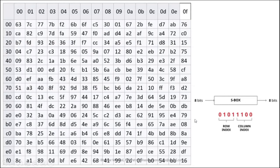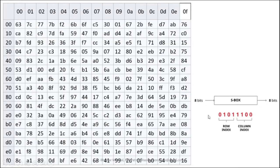The first 8 bits after adding the round key are split into two 4-bit parts: the first 4 bits are used as the row index and the next 4 bits as the column index. The intersection of that row and column gives a cell value, which is the 8-bit output of the S-box. This happens for all 16 bytes, giving 16 outputs from the S-box.